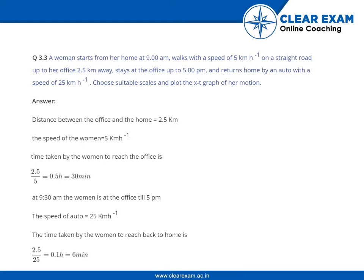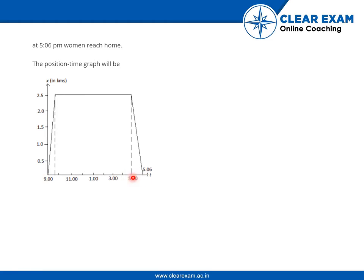Coming to the plotting of the graph — this is the time dimension and this is the distance dimension. This is 2.5 km, and this is 0 because we assume this to be her home. She starts her journey at 9 am and takes 30 minutes to reach the office, so she arrives at 9:30. If 9 is here and 10 is here, the midpoint is 9:30. She reaches that point, and we connect these two points with a straight line.